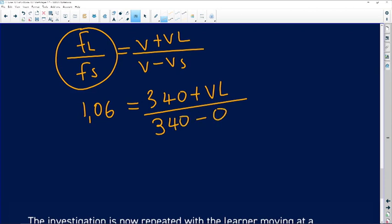Okay, so now we have this and we are looking for VL. And therefore, what can we do now? We can take this 340 to this side, so we can say 340 times 1.06, which will be equal to 340 plus VL.